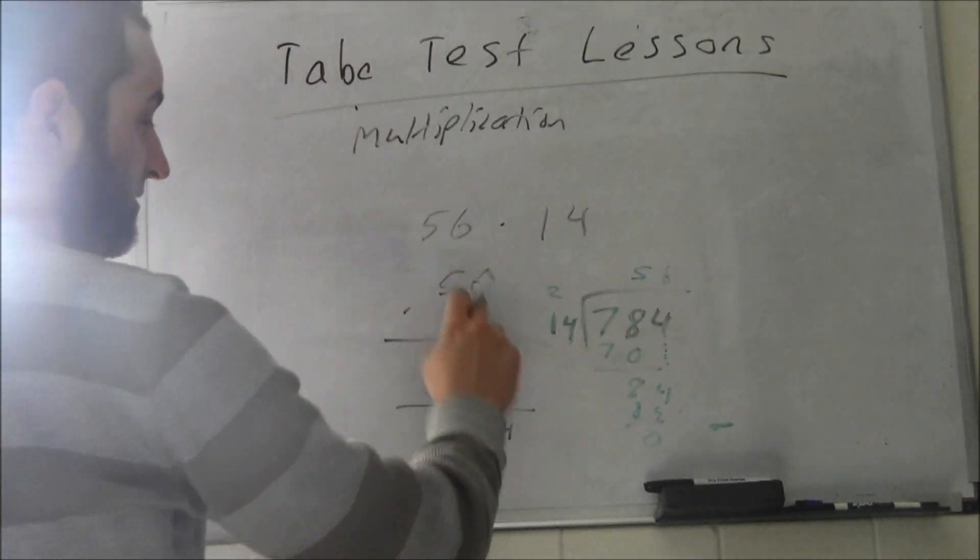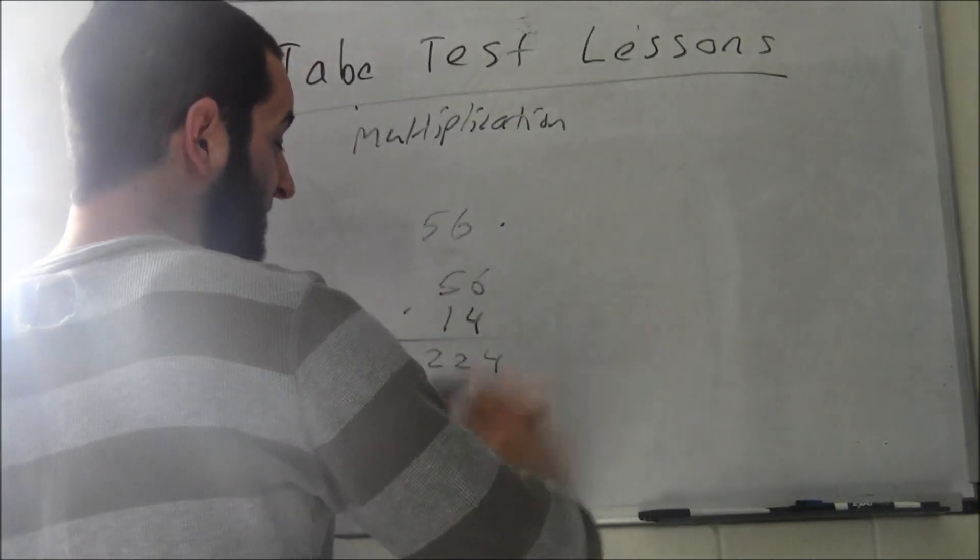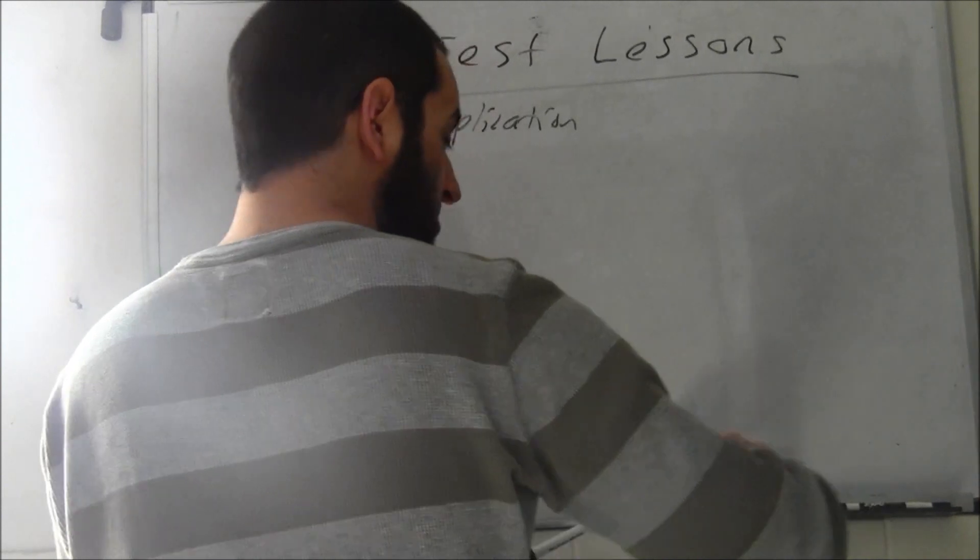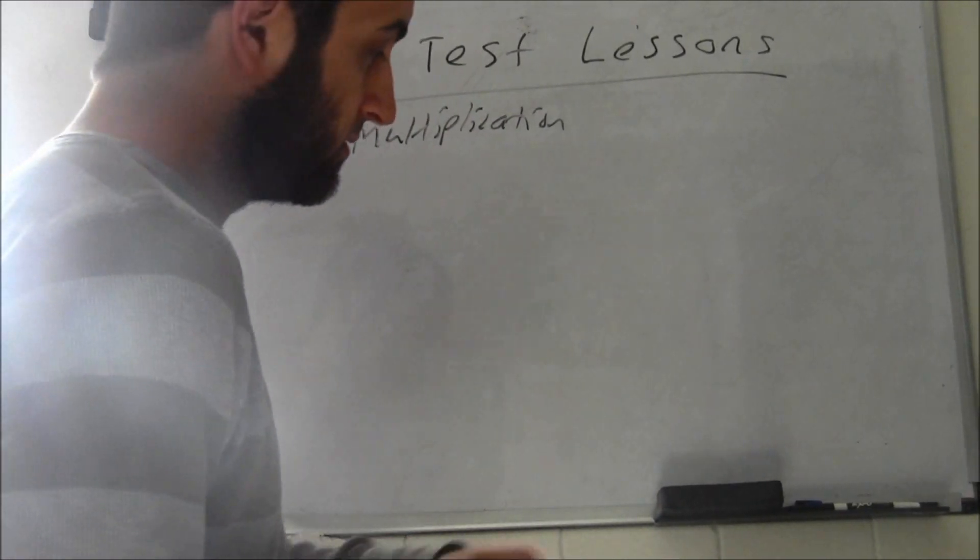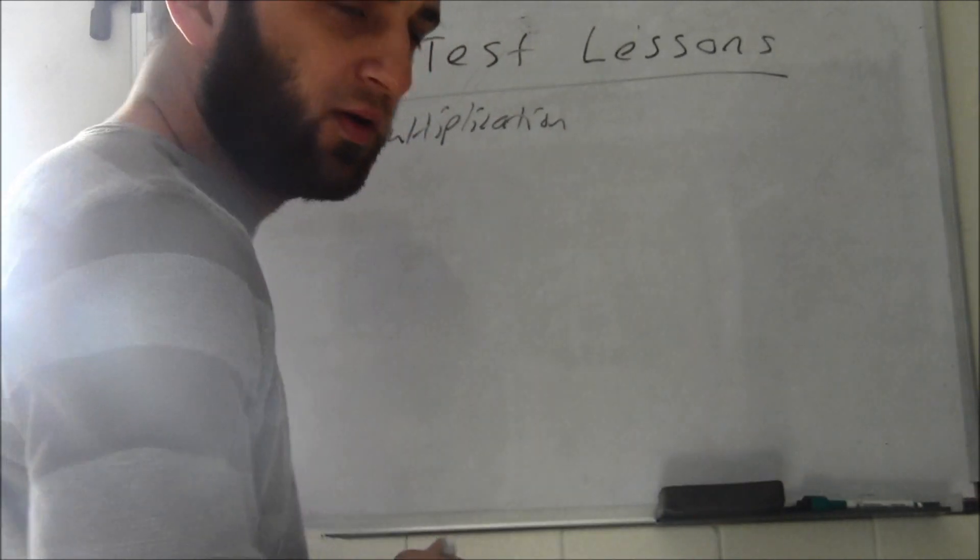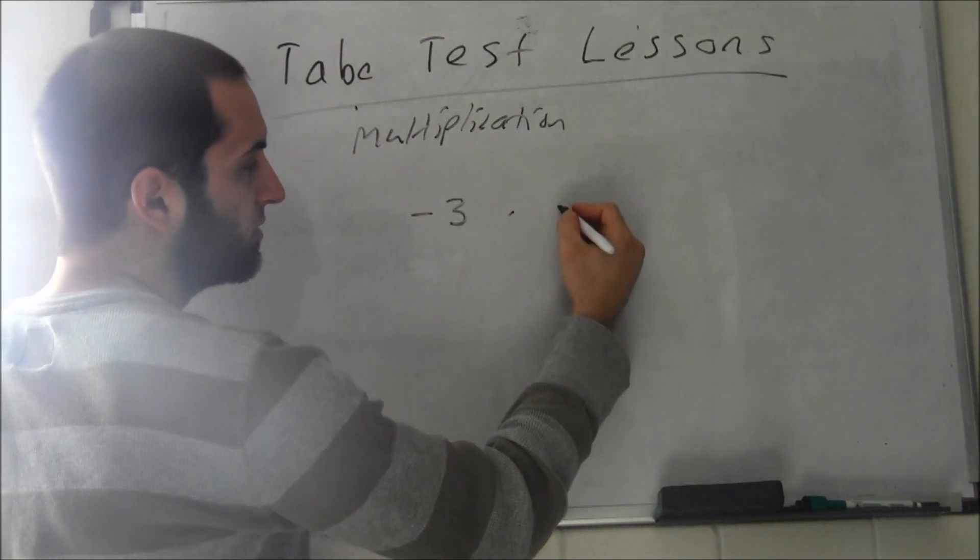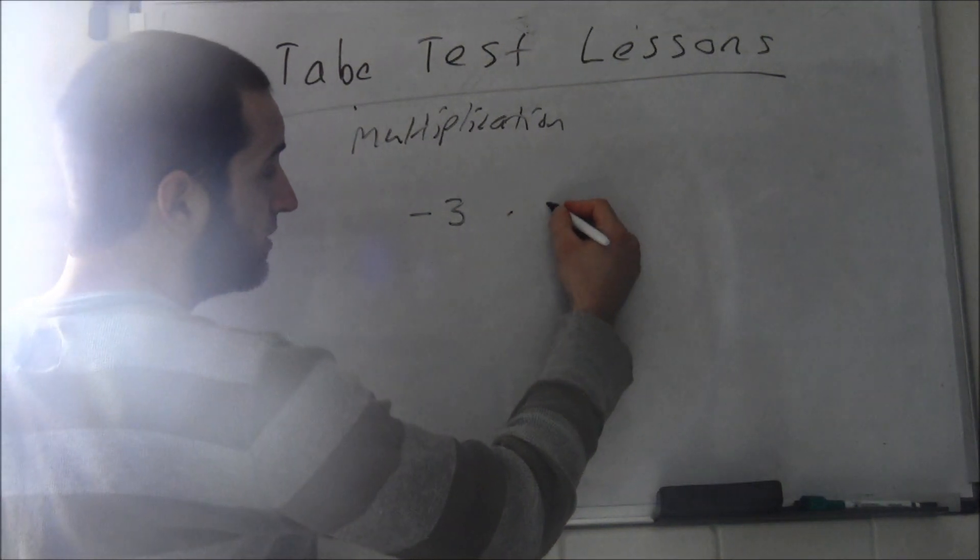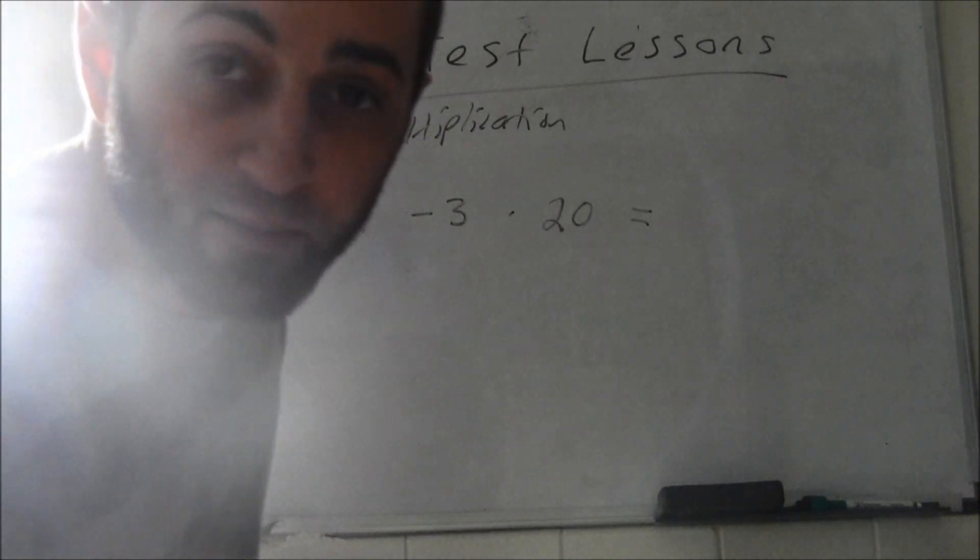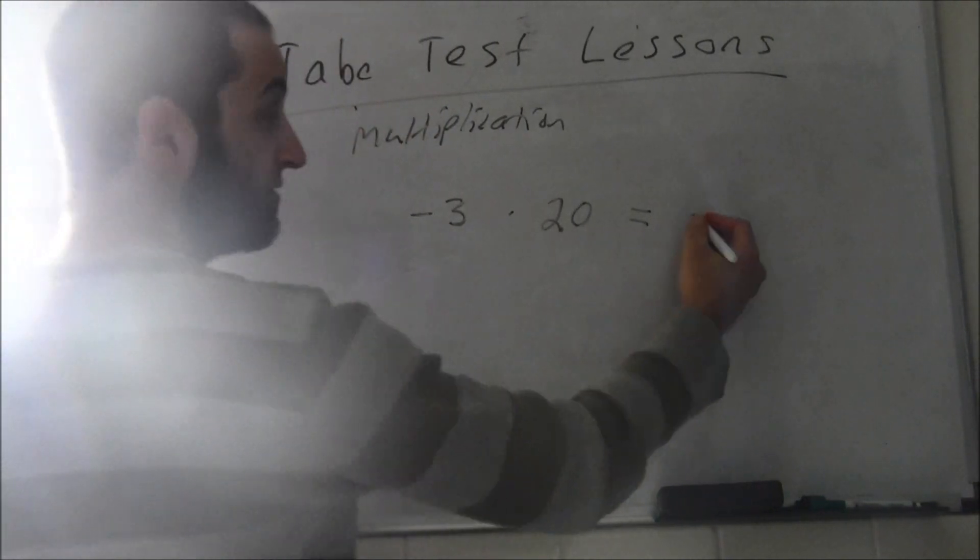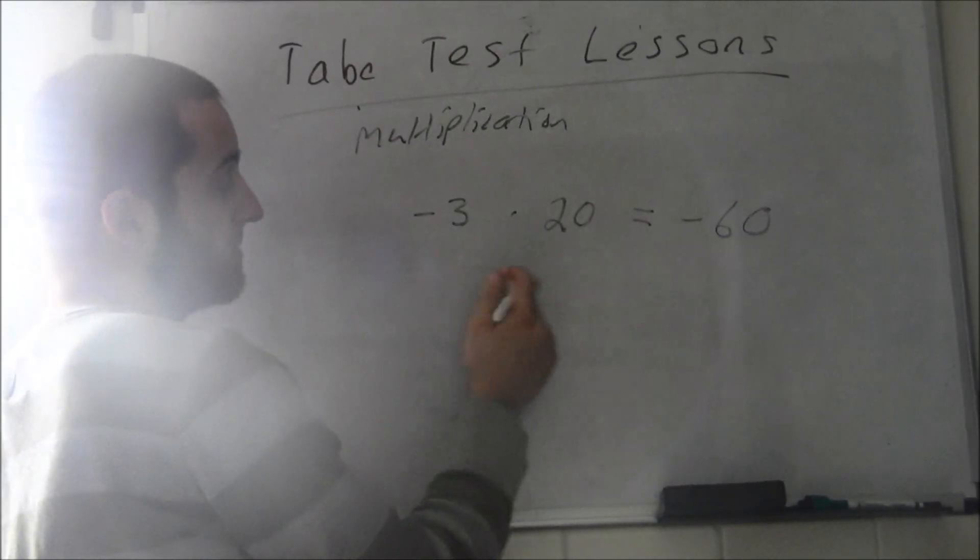So there's your 56. That way you know your answer's right. That's multiplying, multiplication. What is negative 3 times 20? Negative 60 - negative times positive is negative.